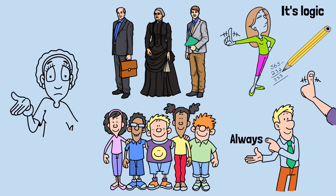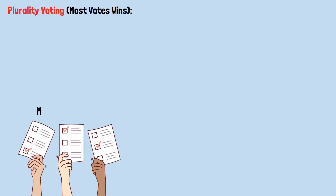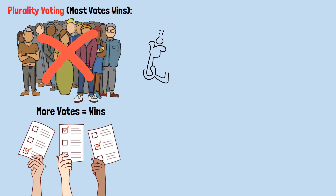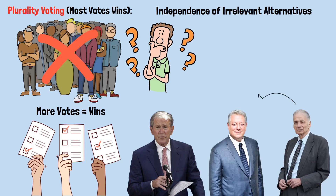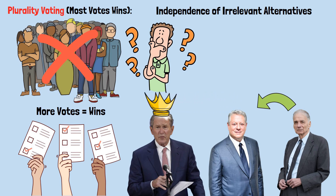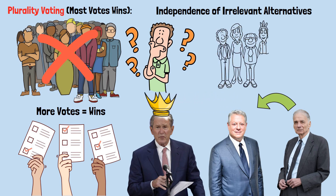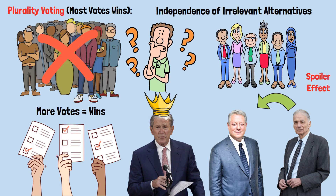Let me show you why every system fails. Plurality voting — most votes wins — is what we use in most elections. Which criterion does it violate? Independence of irrelevant alternatives. Remember the Bush-Gore-Nader example? Nader's presence changed the winner between Bush and Gore, even though people's relative preferences between Bush and Gore didn't change. Spoiler effect: third parties ruin the contest between the frontrunners.